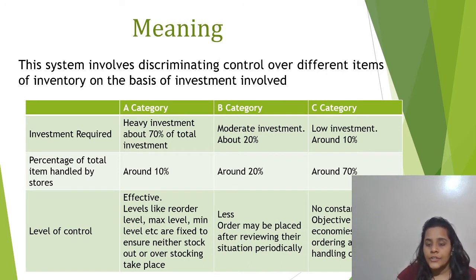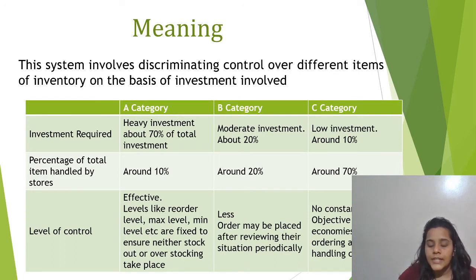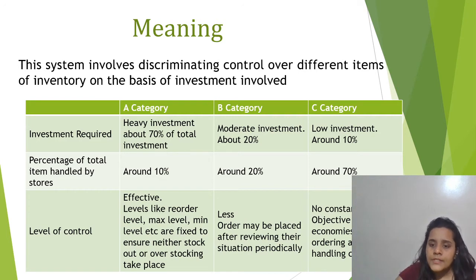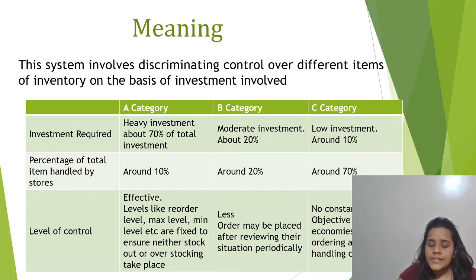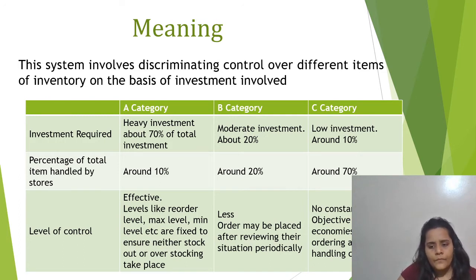Category C items involve the lowest investments. Only about 10% of the total amount is invested in these inventories, but they occupy 70% of the total items handled by the stores. Since every business is concerned with its investments only, and the investment is really low in these categories, there is no constant control per se. The objective is basically to economize on ordering and handling costs.